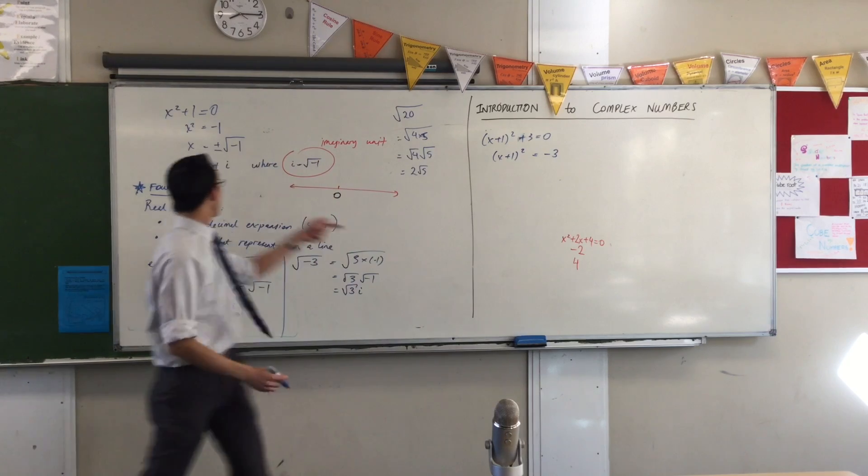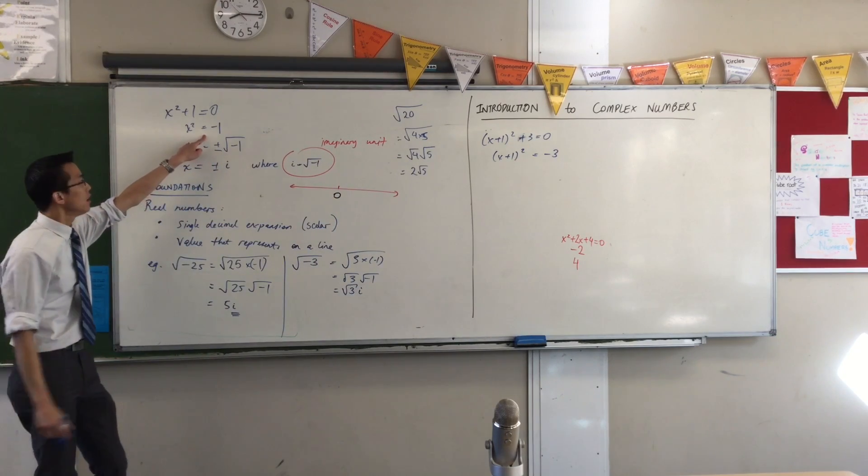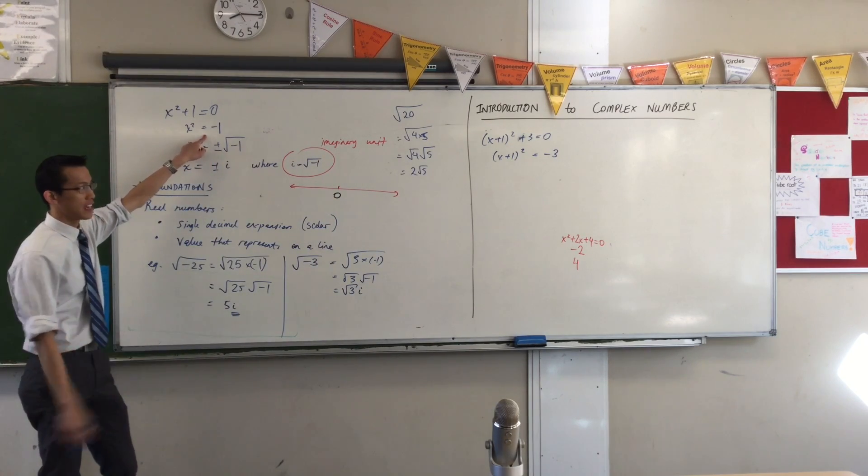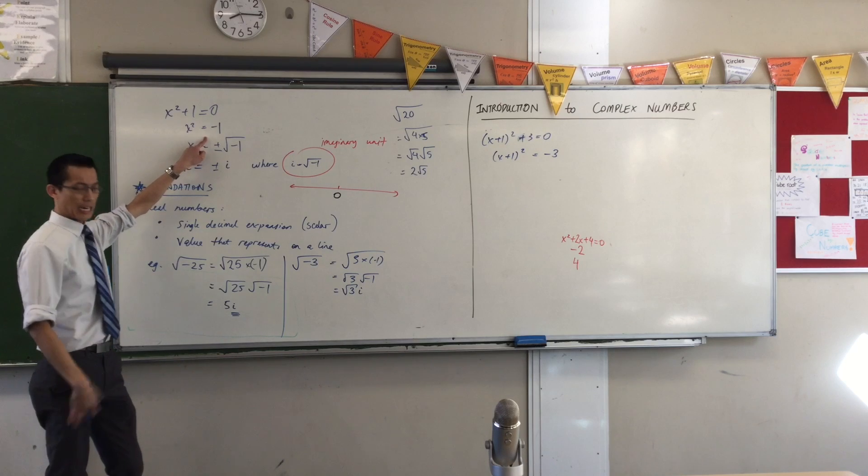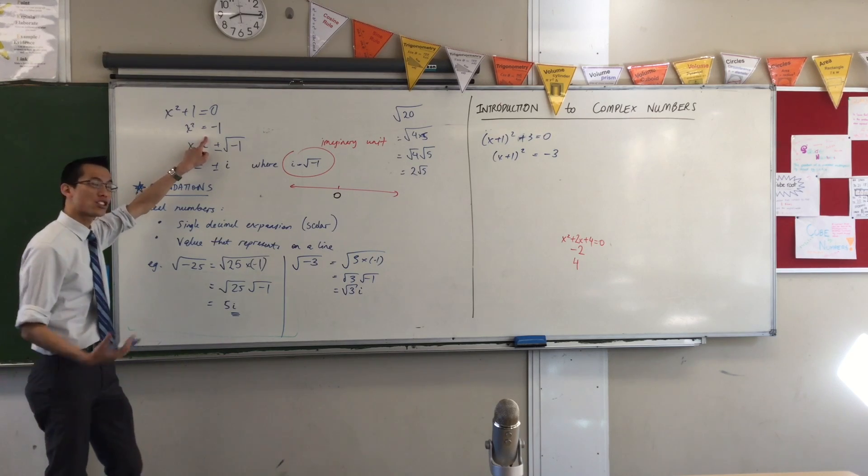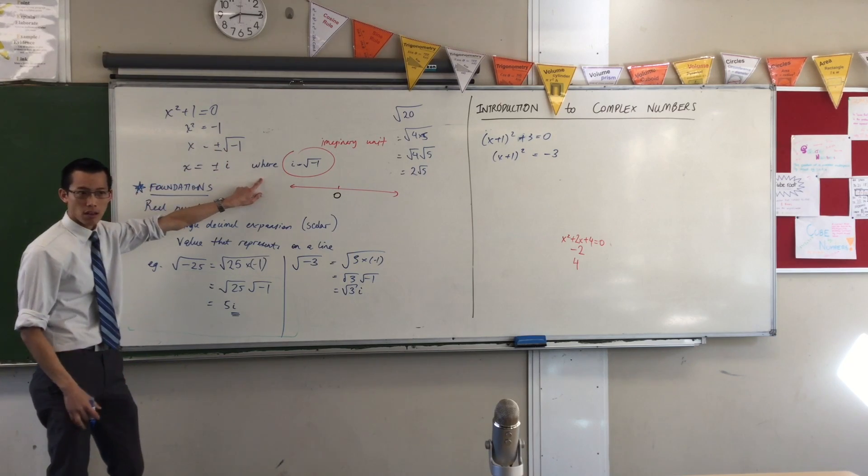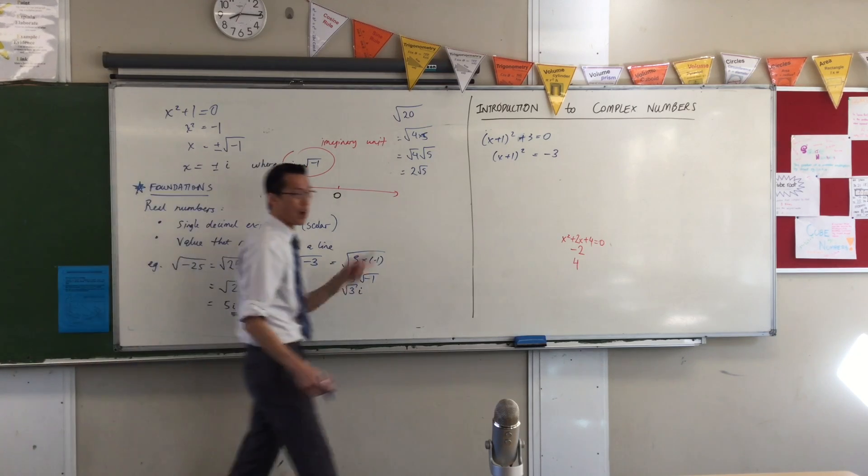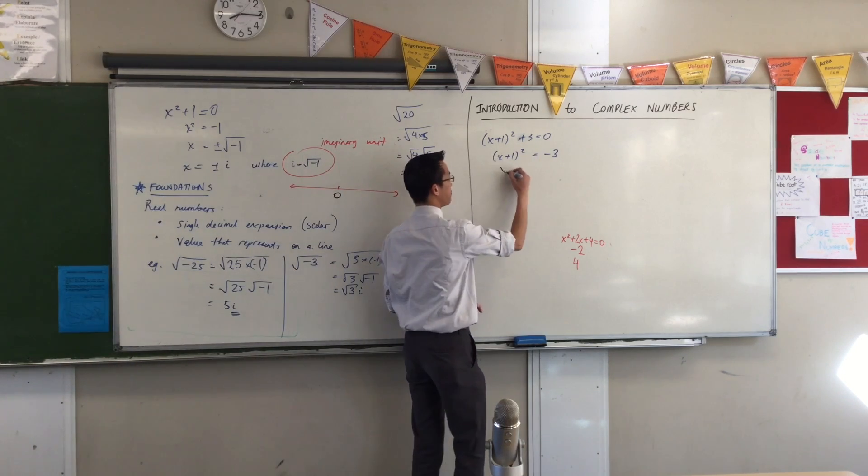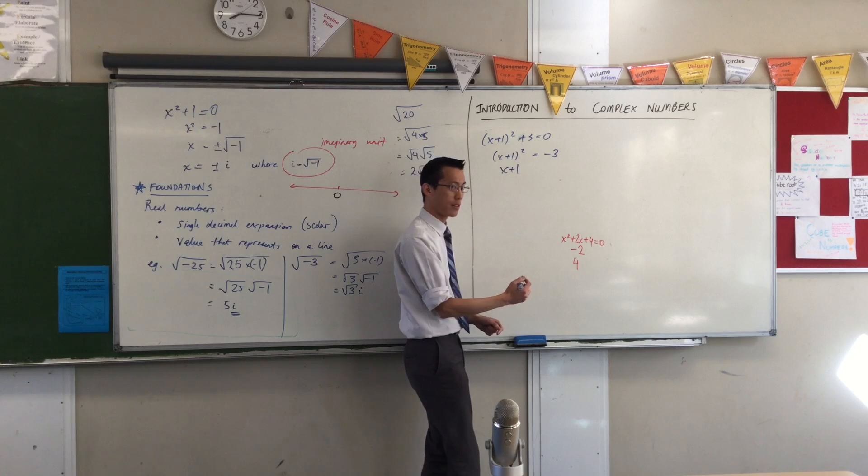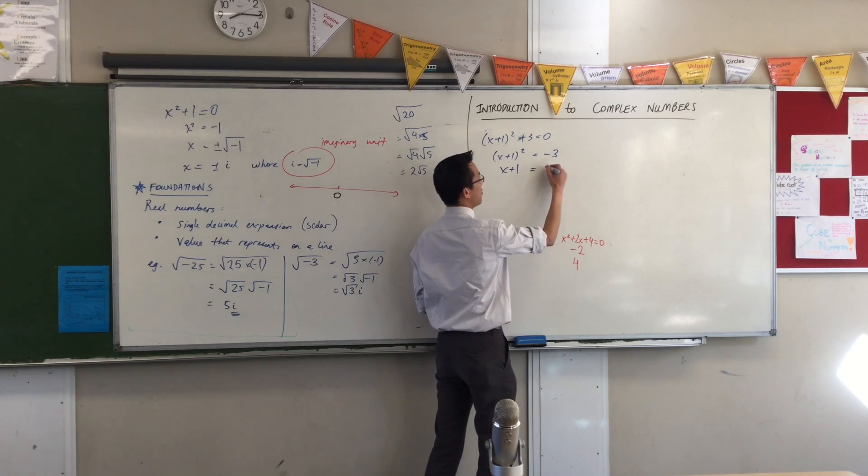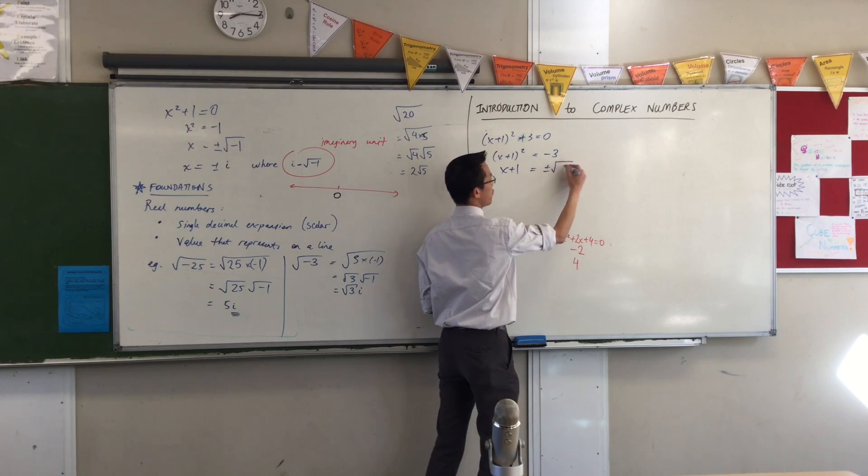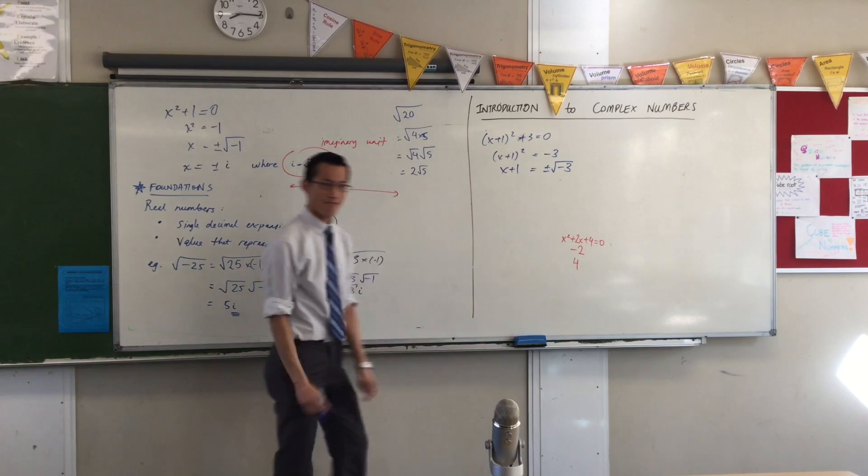Now just like here, instead of saying oh I have a negative number on the right hand side, I can't take square roots. I'm just going to say that's okay. I'm going to let us not just break the rules, just make some new rules. I'm going to take square roots of both sides that leaves me with x + 1 on this side and plus or minus the square root of negative three on this side.